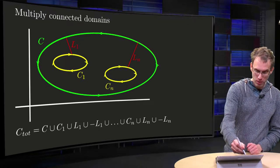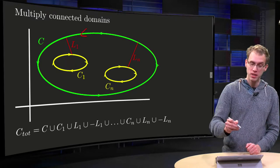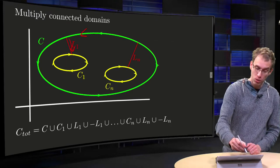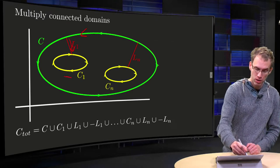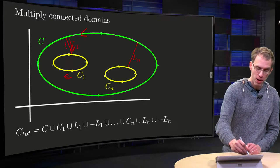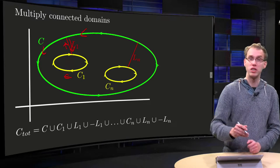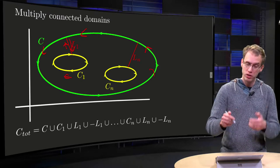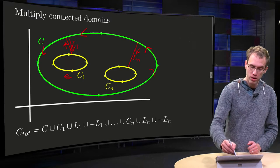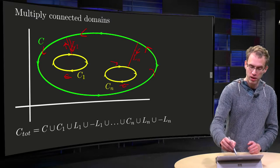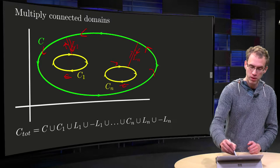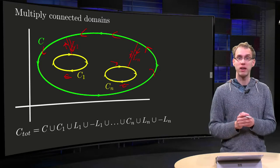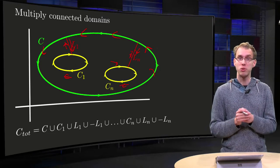We start somewhere going counterclockwise along c, then we go in along l1, then we go clockwise along c1, and then we go back along l1, and then we continue along c. We continue until we are at the last one, we go in along ln, we go clockwise along cn, then we continue, then we go back along ln,